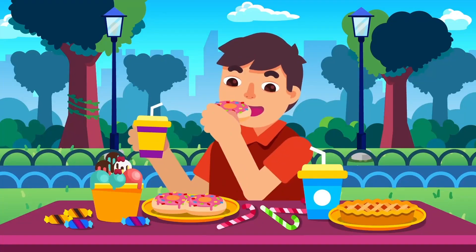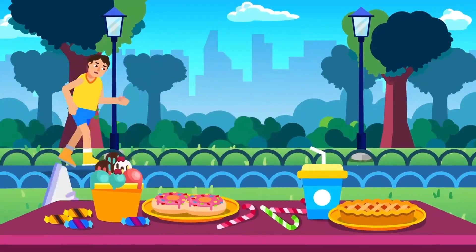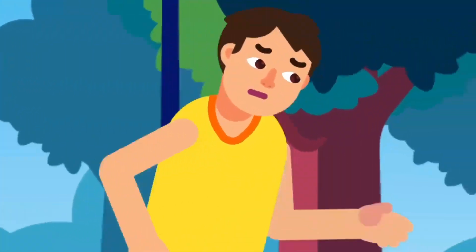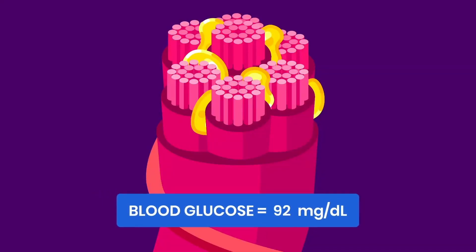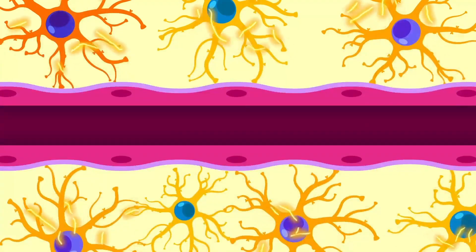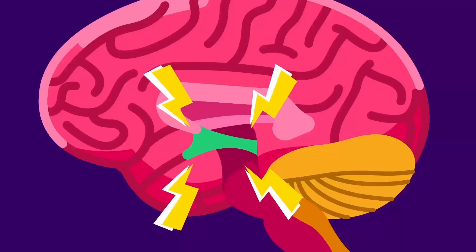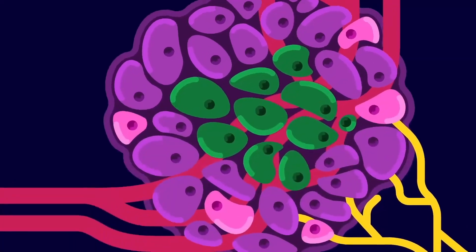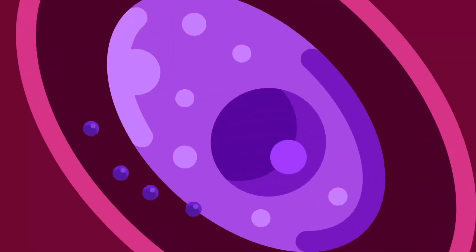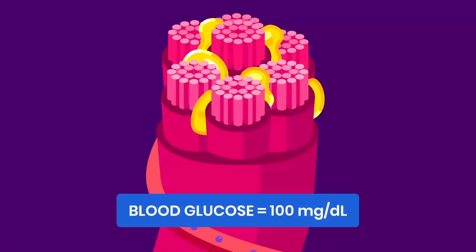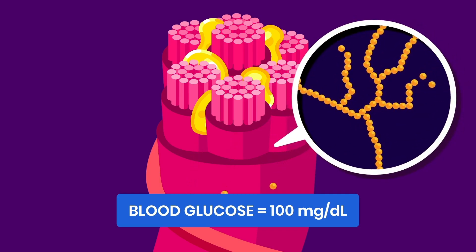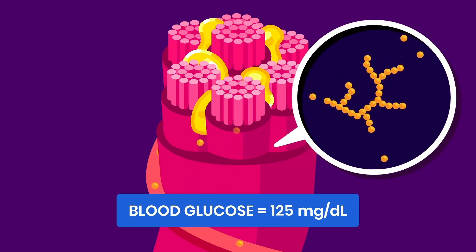The homeostasis mechanism also responds to internal stimulus — when the opposite change occurs and the blood runs out of glucose supply. The same receptors detect the blood glucose level and pass the information to the brain, which then signals the pancreas. This time, the alpha cells act as the effector to secrete the glucagon hormone. The hormones flow along the blood and act on the liver and skeletal muscles to convert the glycogen back into glucose, raising the blood glucose level to normal.